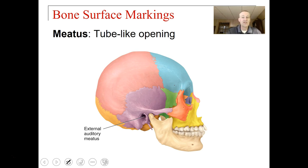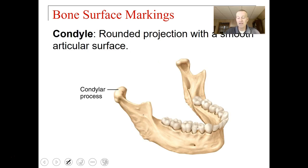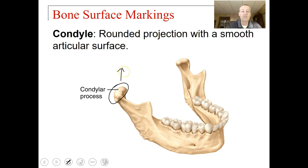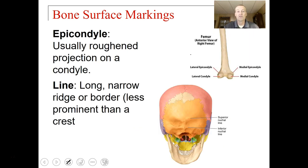A meatus is a tube-like opening. The external auditory meatus is a tube-like opening to the inner ear where your eardrum is. A condyle is a rounded projection with a smooth articular surface. You can see the condylar process here — it fits into the mandibular fossa. When a process is rounded, it's articulating, and the roundedness reduces friction from contact of two bones together.